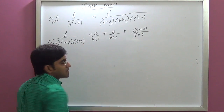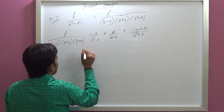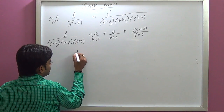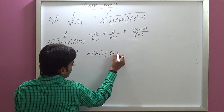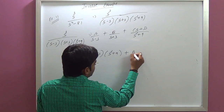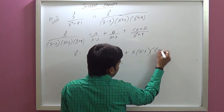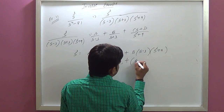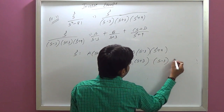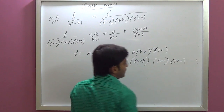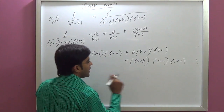We have to find out A, B, C, and D. So S cubed equals A times (S plus 3)(S squared plus 9), plus B times (S minus 3)(S squared plus 9), plus (CS plus D) times (S minus 3)(S plus 3).